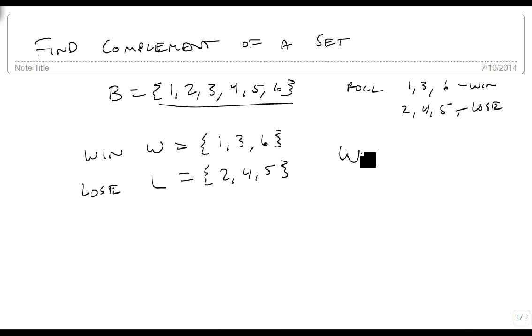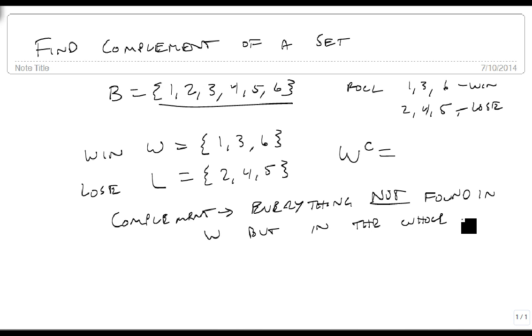So if we use the complement, which is a capital C that we put up in the power spot, the complement of W, is everything not found in W, but in the whole set, the complete set, this guy up here, our dice. So W complement is 2, 4, 5, which happens to be the same thing as a loss.